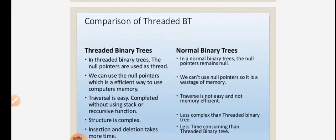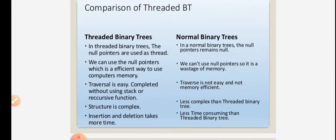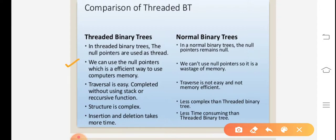Comparison of threaded binary tree and normal binary tree: In a threaded binary tree, the null pointers are used as threads. In a normal binary tree, the null pointers remain null. Using null pointers as threads is a more efficient way to use computer memory, whereas in a normal binary tree null pointers represent wasted memory.